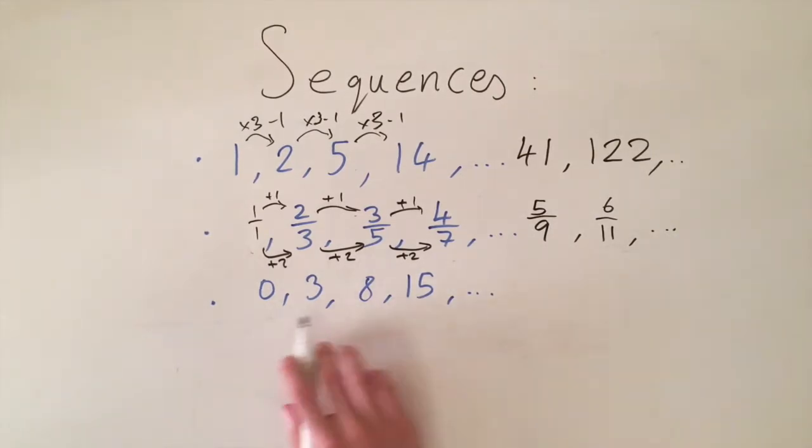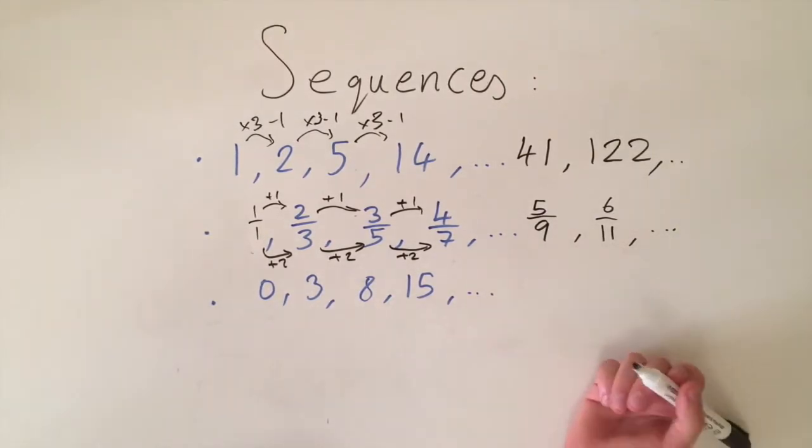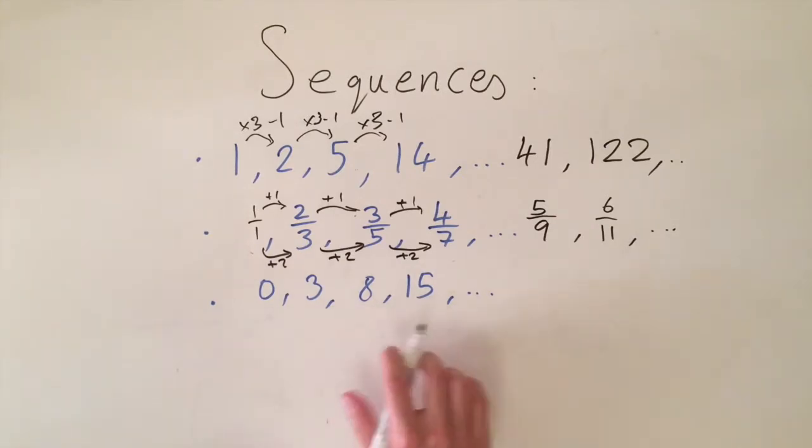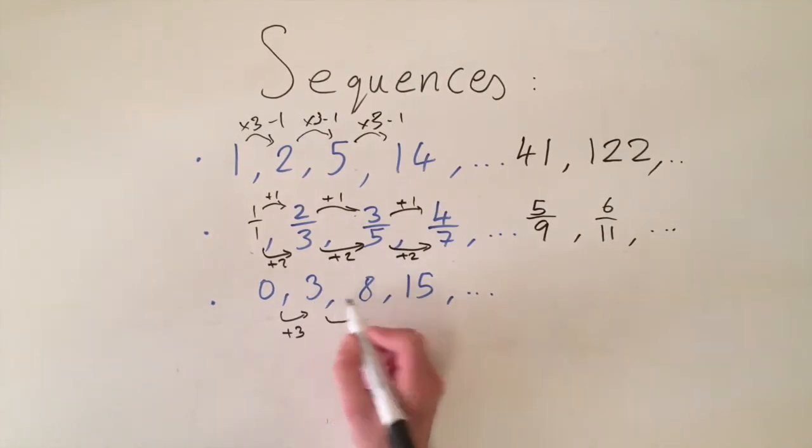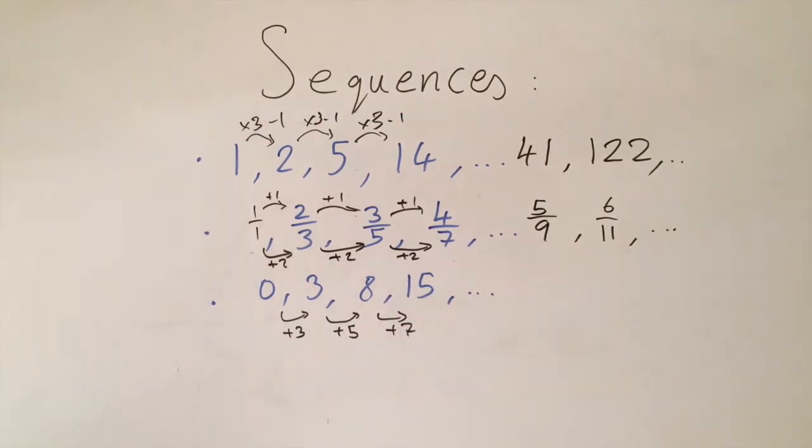So the last one this is quite interesting, it's not quite obvious at the start and there's actually a few different ways you can approach this but if we just look at the difference between the terms so we've got we're adding 3 and then from 3 to 8 we're adding 5 and then from 8 to 15 we're adding 7 and if we look at these numbers we are adding the odd numbers so starting at 0 adding 3 then 5 then 7 so the difference between the numbers we're adding actually has its own pattern so this is kind of a sequence of its own within a sequence so the rule for this original sequence is that we're adding the odd numbers starting at 3 going up so 3, 5, 7.